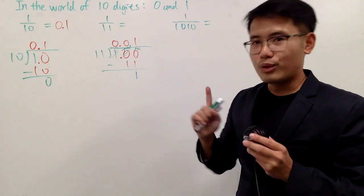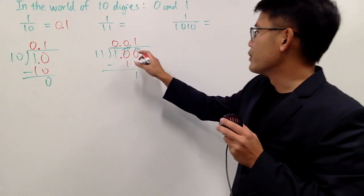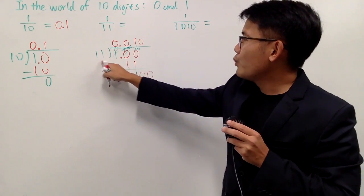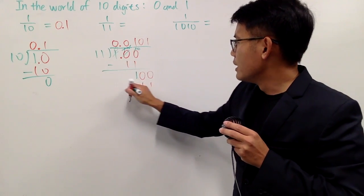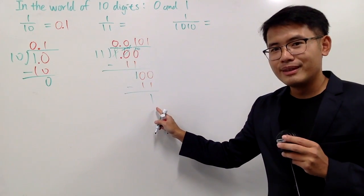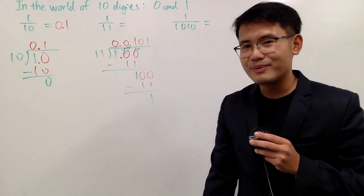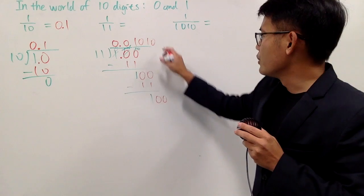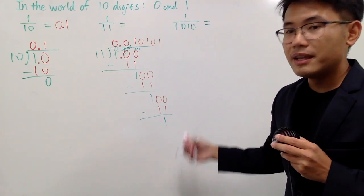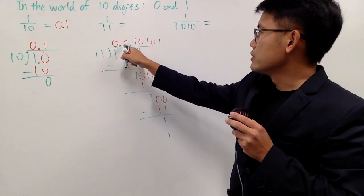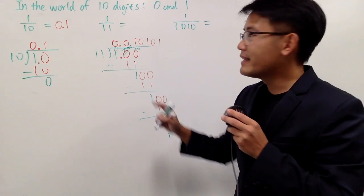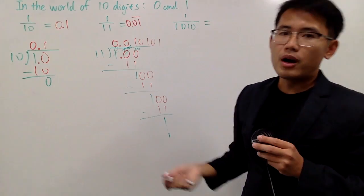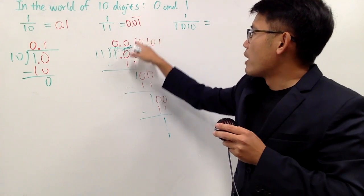We are going to continue — don't give up, we can keep doing it. Go ahead and put down another 0. 11 doesn't go into 10, so you put a 0, then another 0. 11 goes into 100 one time. 1 times 11 is 11. Subtracting, you get 1 again. This looks familiar — it seems we've done it earlier. If you keep doing it, it's actually going to be repeating. So the repeating digit is just 0101... up to the binary point. In other words, 1 over 11 is just 0.010101..., and you can put a bar on top to mean that this part is repeating.